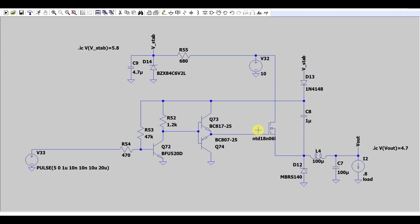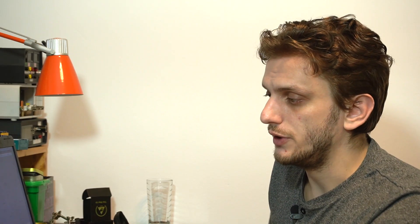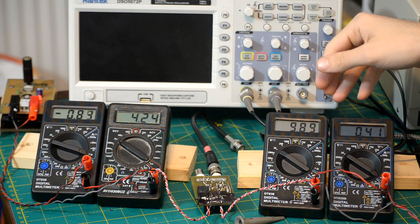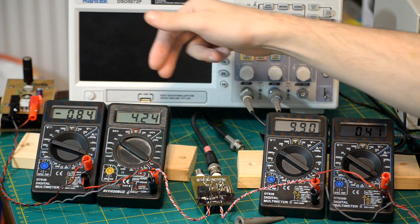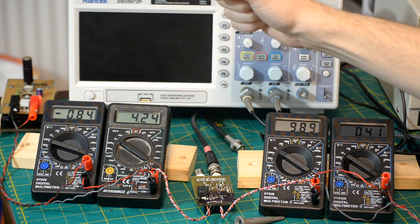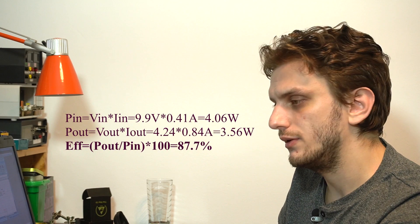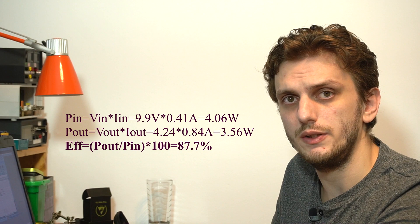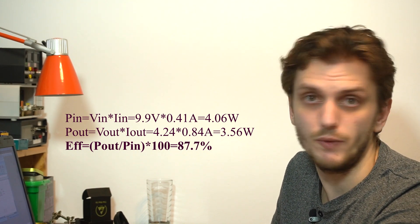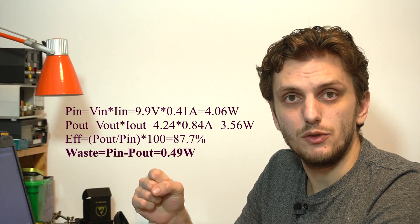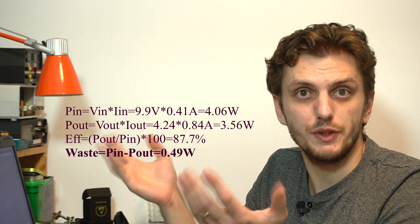If we run this circuit — I've laid it out here with multimeters measuring input voltage, input current, output voltage, and output current drawn by the active load — we can calculate that the converter is working at roughly 87–88% efficiency, which is not bad for a buck converter, especially one built with this sort of driver. But that still begs the question: we're dissipating almost half a watt of energy somewhere. So where is it going?